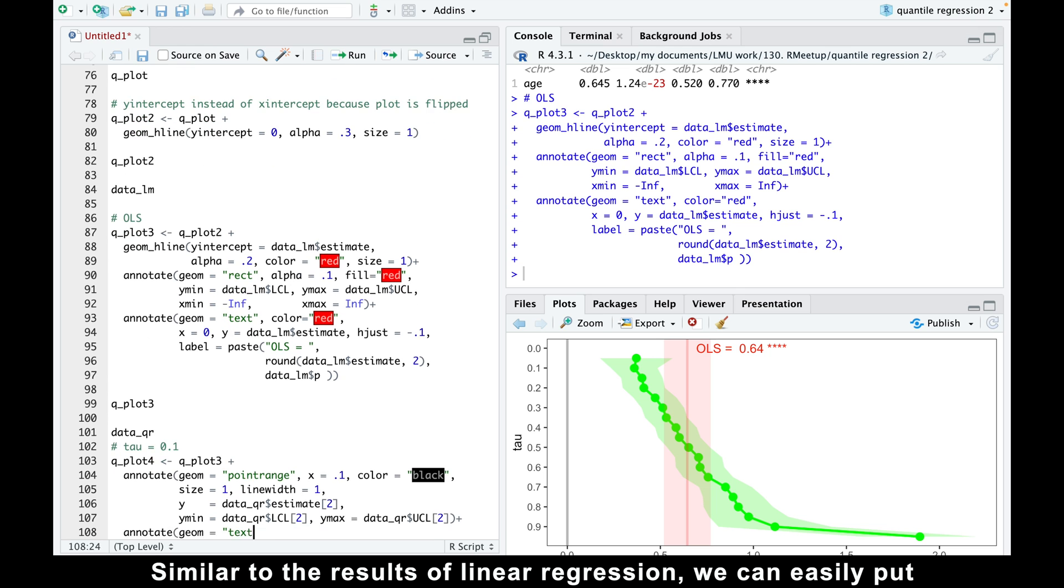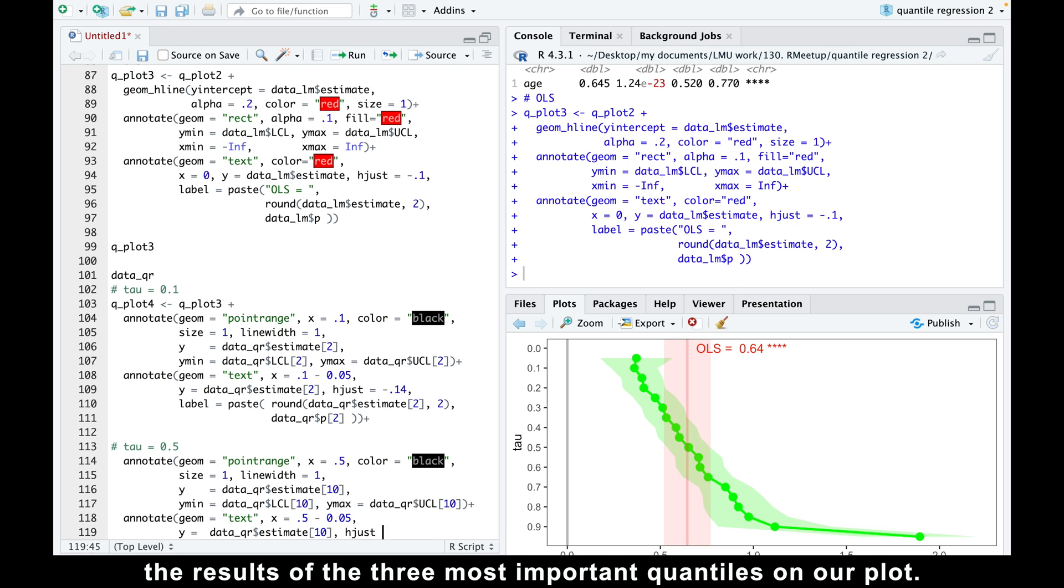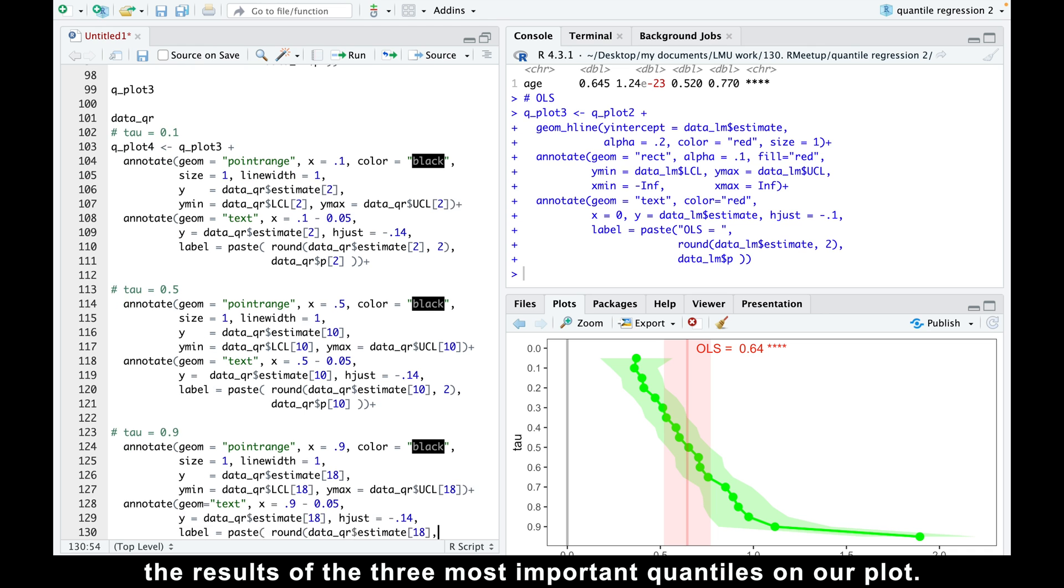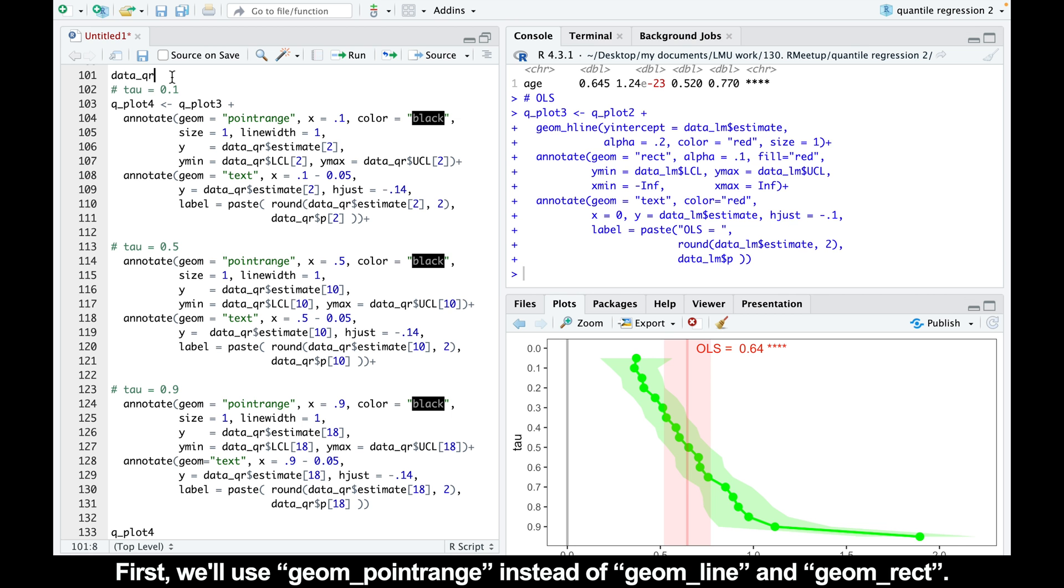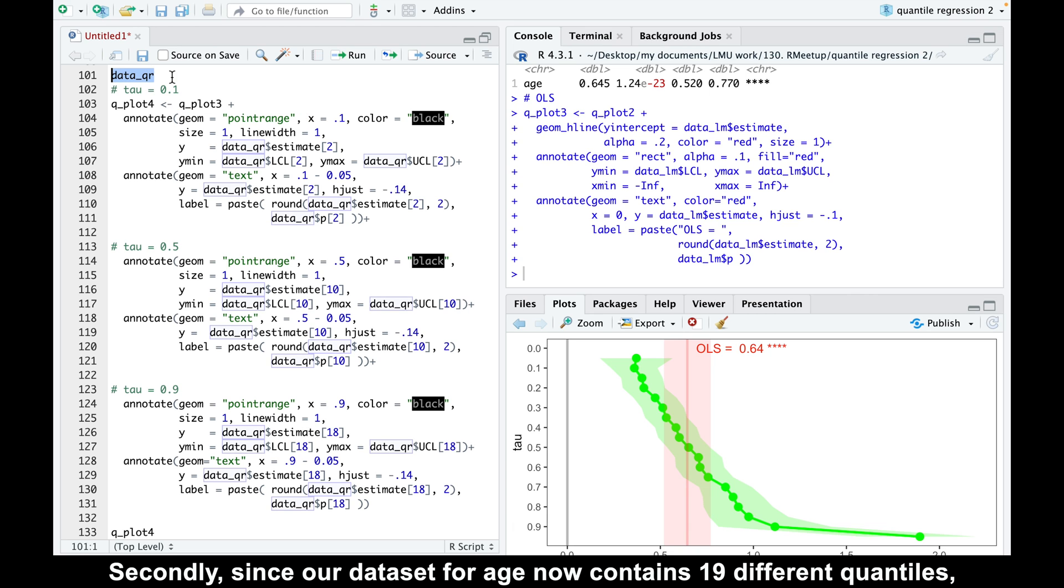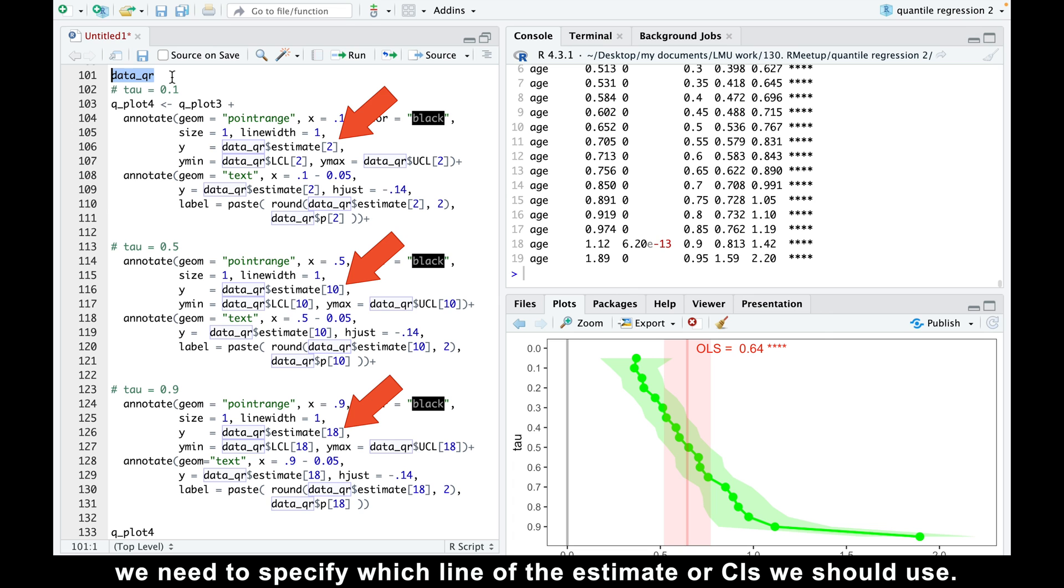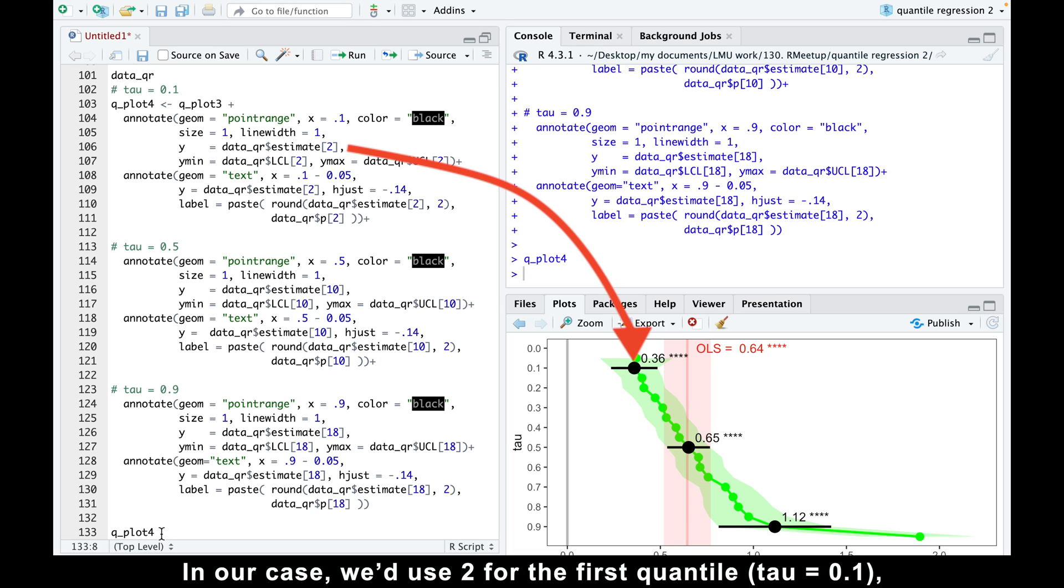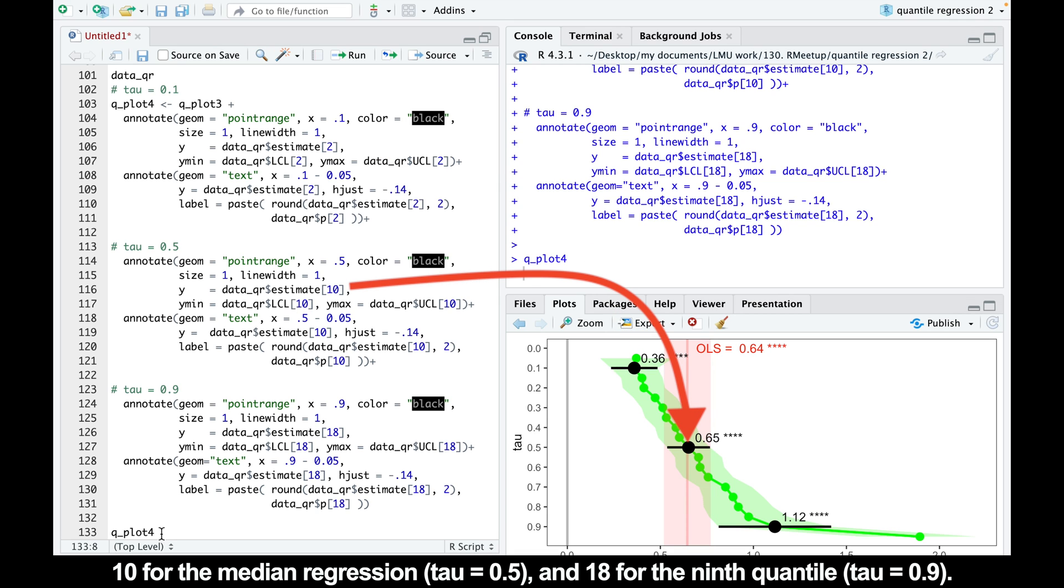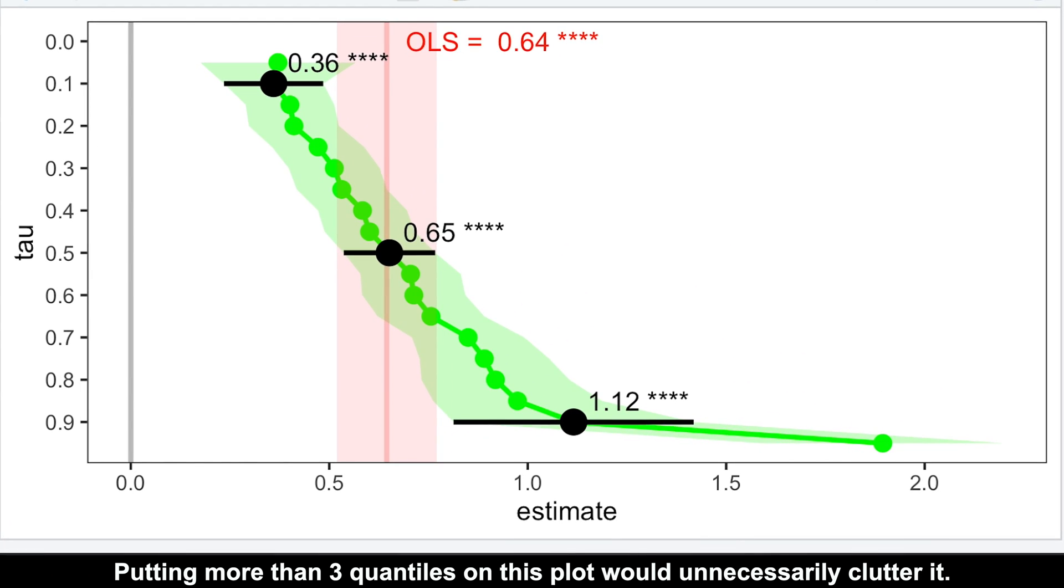Similar to the results of linear regression, we can easily put the results of the three most important quantiles on our plot. There are only two small differences. First, we'll use geom_point_range instead of geom_line and geom_rect. Secondly, since our dataset for age now contains 19 different quantiles, we need to specify which line of the estimate or confidence intervals we should use. In our case, we'd use 2 for the first quantile, 10 for the median regression, and 18 for the ninth quantile. Putting more than three quantiles on this plot would unnecessarily clutter it. But using the three most important ones seems optimal to me.